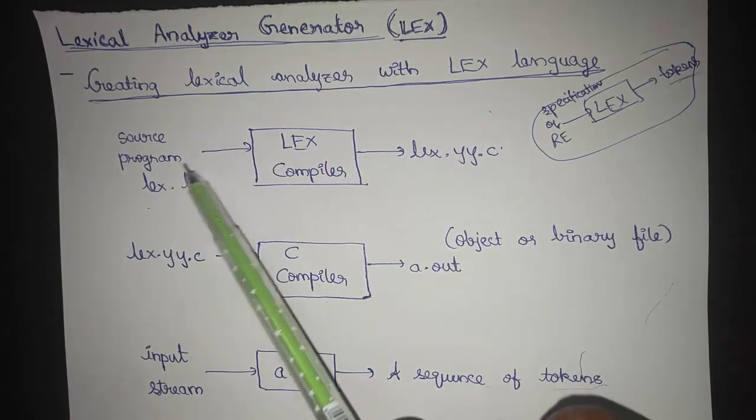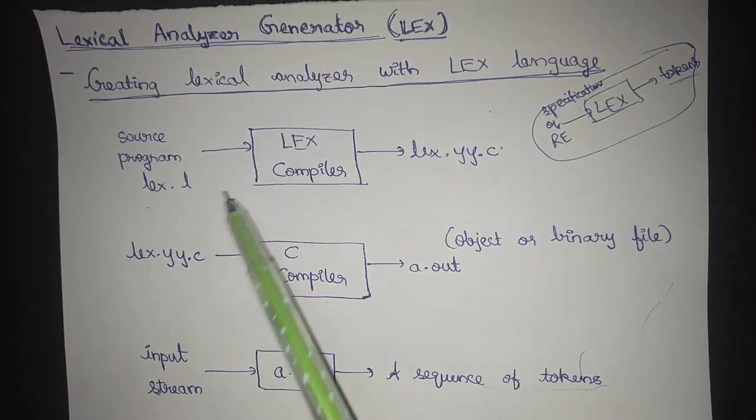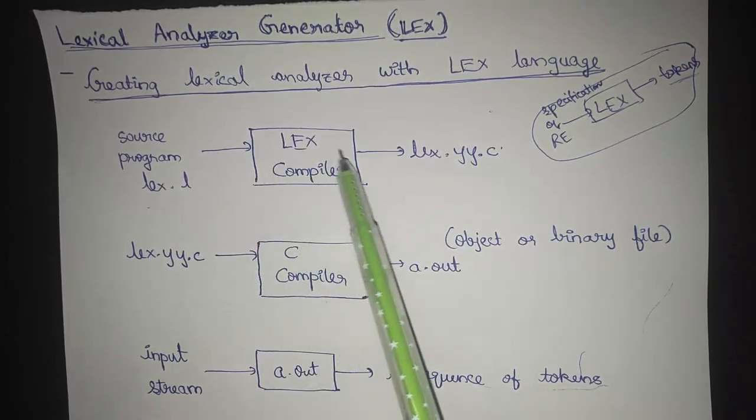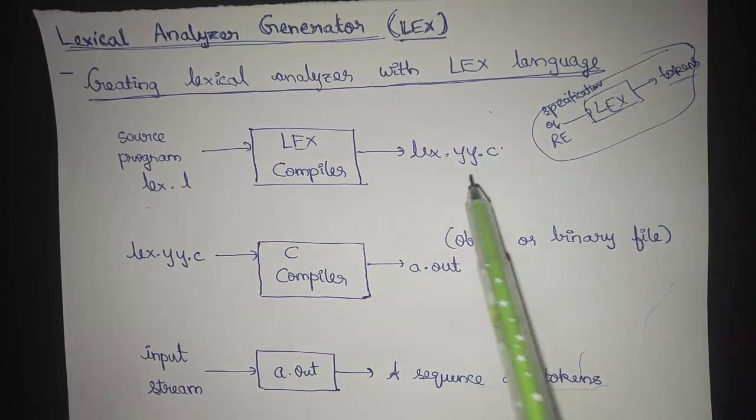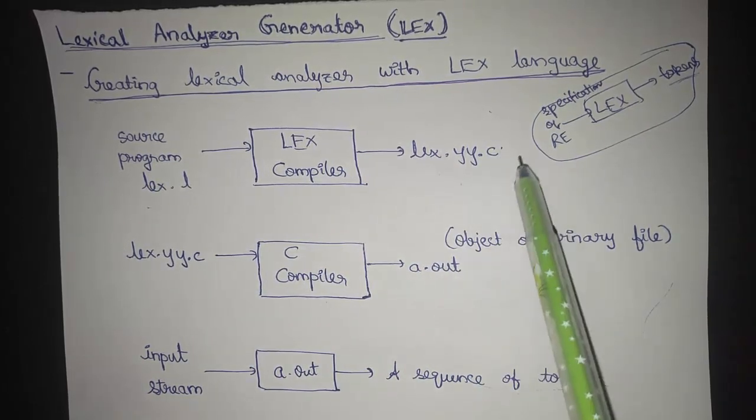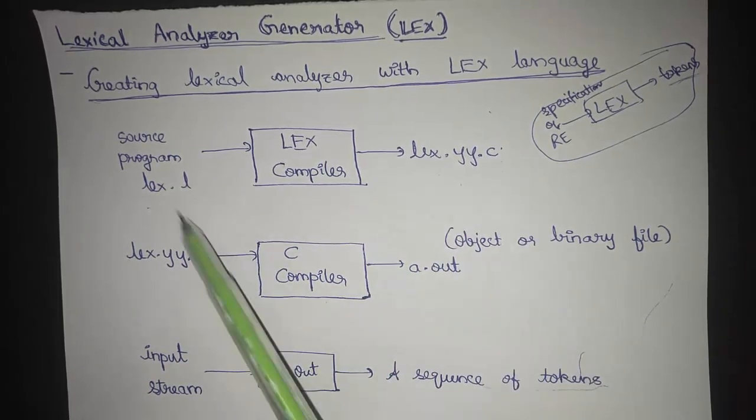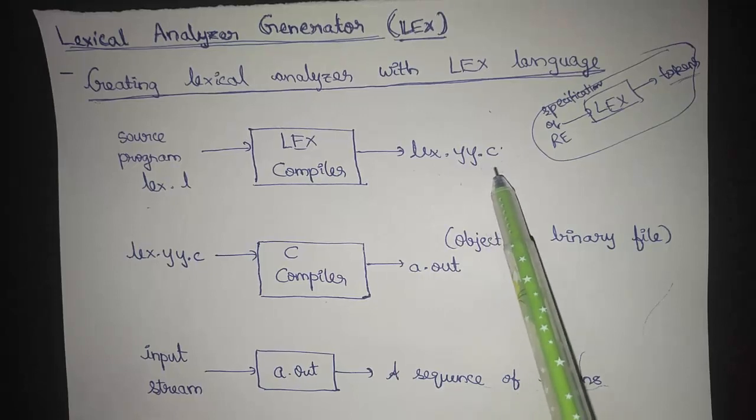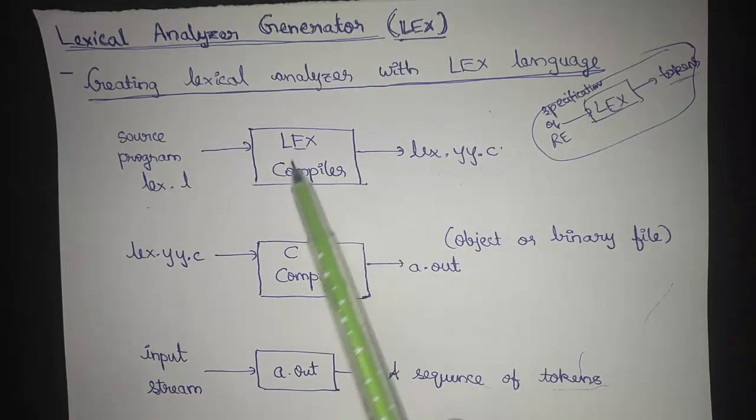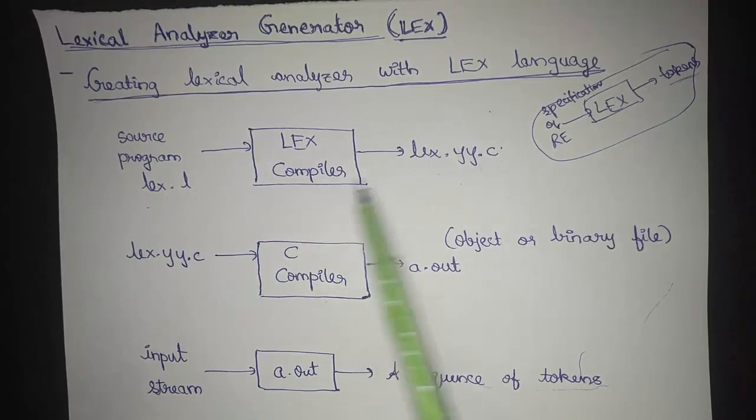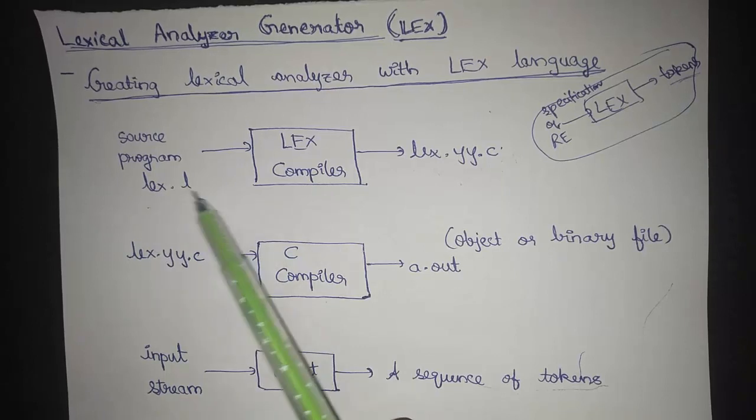First, the source program in the form of lex.l, or the .l extension, is sent to the LEX compiler which then generates a predefined C program lex.yy.c. The lex.yy.c is going to be dependent on the lex.l. Even though the lex.yy.c is a program that is defaultly generated by the LEX compiler, this program is going to be dependent on the size of the lex.l.